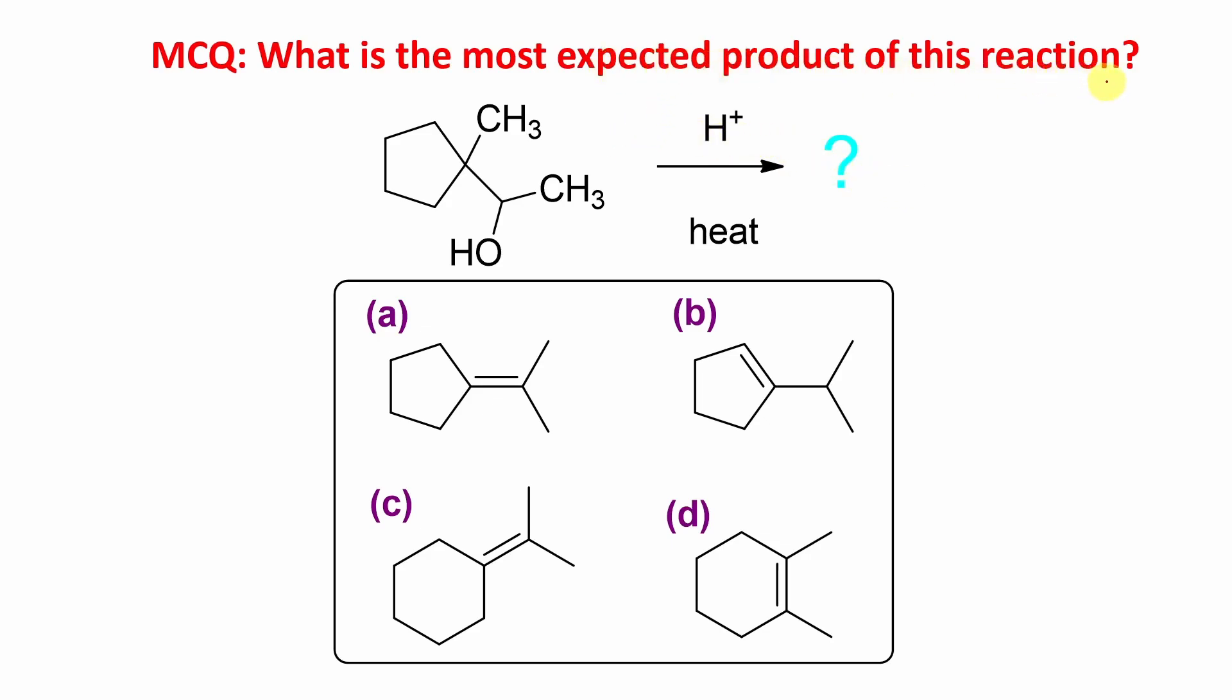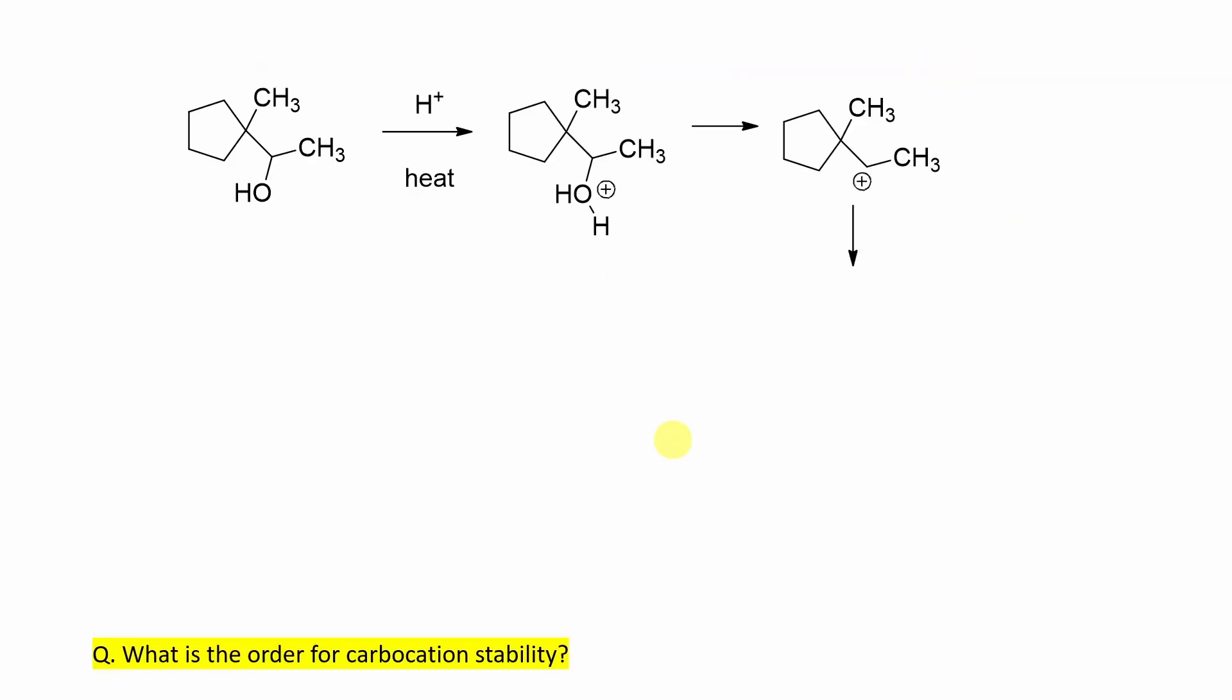Now, the most expected product of this reaction - look at the condition. This is actually a secondary alcohol and it reacts with first H+, then heat. What kind of reaction is possible? Obviously, elimination. And you look at all four options. All four options are elimination alkene products, but all are different. So here some rearrangement chances are there. Let's go stepwise.